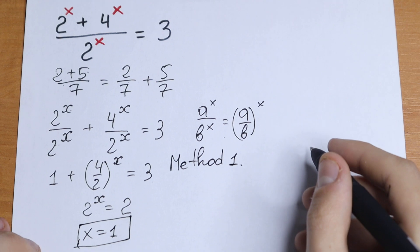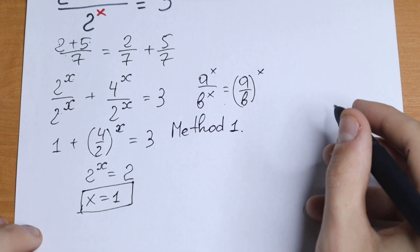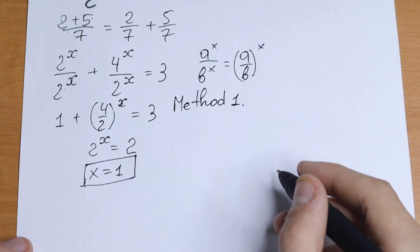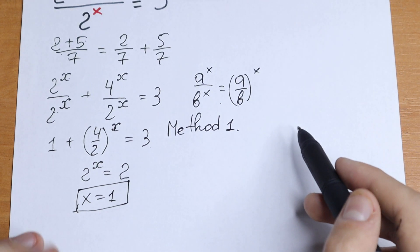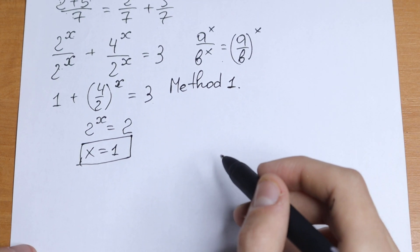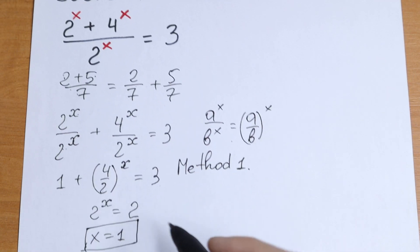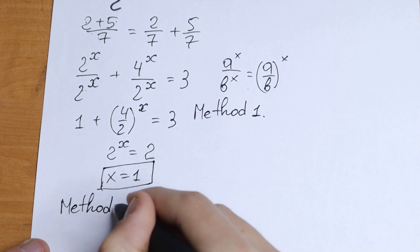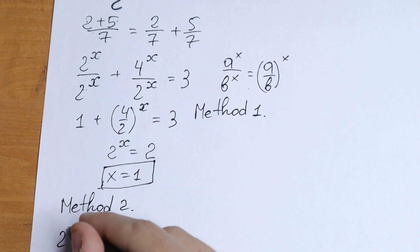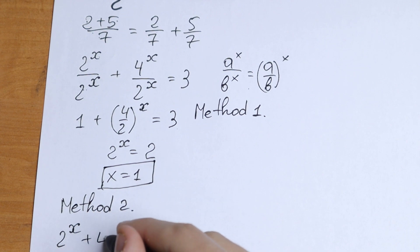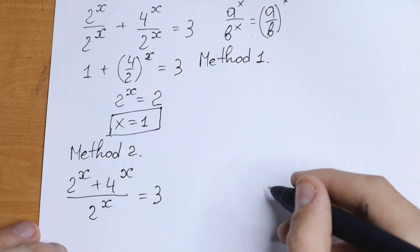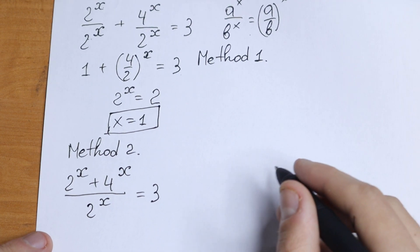Now I want to show you a really quick second method. There is also a third method using logarithm, but that will be more complicated. For the second method, let's write the equation once more: 2 to the power x plus 4 to the power x, divided by 2 to the power x, equal to 3.